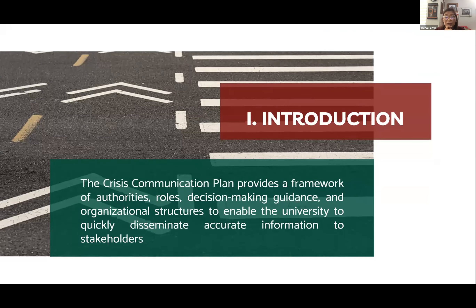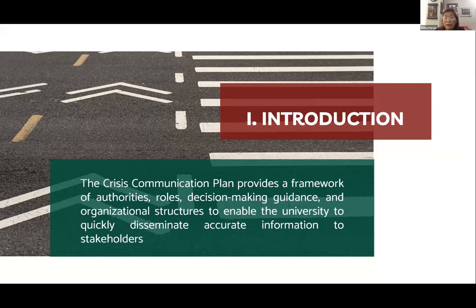Chapter one is the introduction, which includes a statement that the crisis communication plan provides a framework of authorities, roles, decision-making guidance, and organizational structures to enable the university to quickly disseminate accurate information to stakeholders. That is basically the foreword and introduction to that chapter.